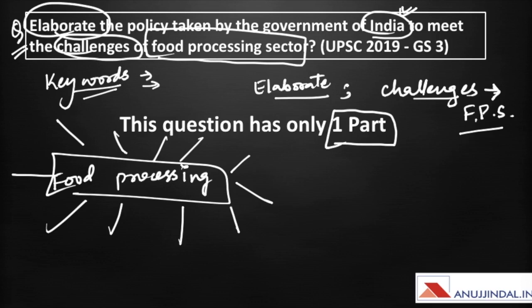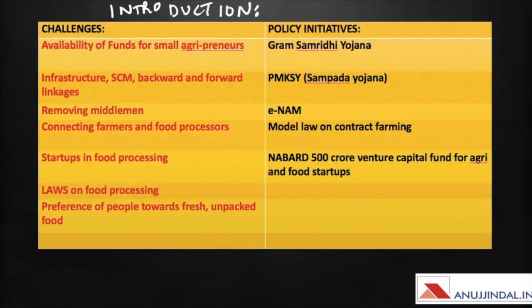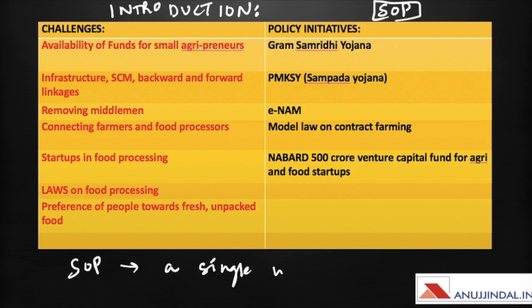Let us start with the main answer. If we think from the examiner's perspective, we would understand that going through thousands of answers is not an easy task. Therefore, your objective is not only to write a good answer, but also to write an answer which is simple to understand. Keeping that in mind, I have created a Standard Operating Procedure, also called SOP. This SOP says you find a single way of writing your answers and stick to it, ensuring it syncs with the majority of questions asked in GS.